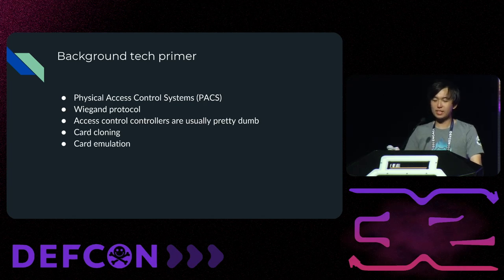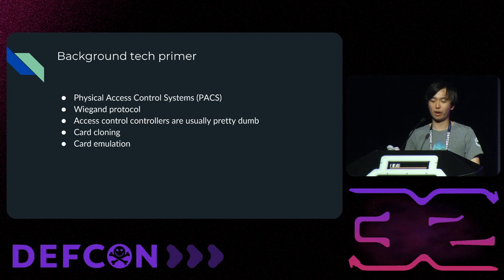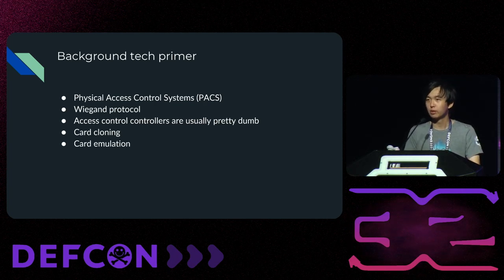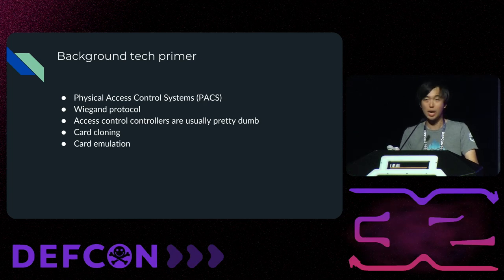A real-world use case for emulation is the HID transitional credentials called SR, or iClass SR. These have a unique property where the secure part of the credential — the Secure Identity Object — is cryptographically bound to the card's serial number. Since there are no serial-number-changeable iClass cards, you're unable to make a direct copy, which means we're going to emulate those.